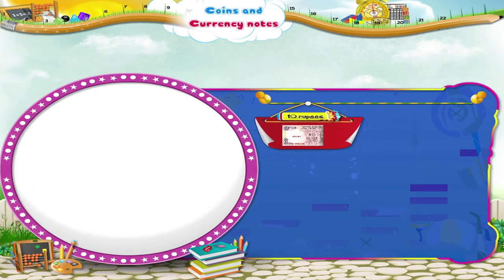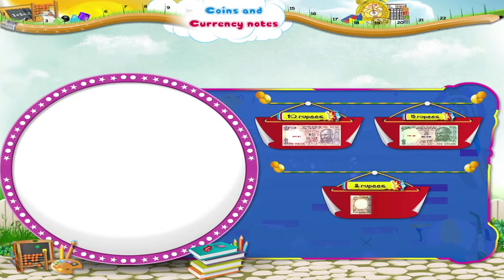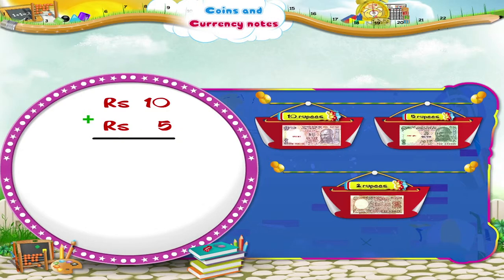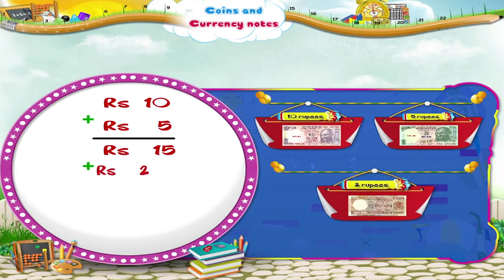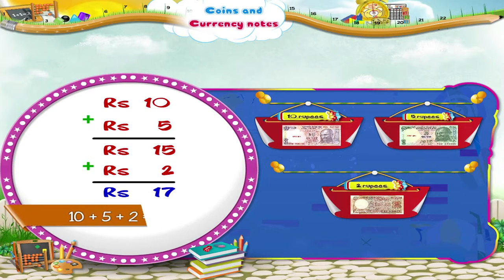Here is another. A 10 rupee note, a 5 rupee note and a 2 rupee note. So, 10 rupees plus 5 rupees equals 15 rupees. 15 rupees plus 2 rupees equals 17 rupees. So, 10 plus 5 plus 2 equals 17 rupees.